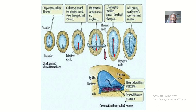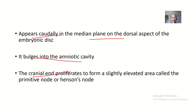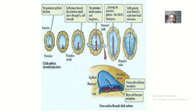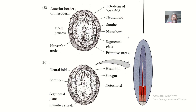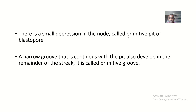The cranial end of the primitive streak proliferates to form a slightly elevated area called the primitive node, or Hensen's node. You can see this is Hensen's node if you trace the labelling — the cranial portion of the primitive streak forms Hensen's node or the primitive node.